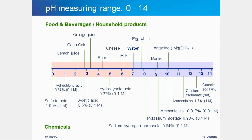The whole pH range includes both acidic and alkaline pH values. The scale for pH is defined from 0 to 14, where pH values from 0 to 7 are in the acidic range and pH values from 7 to 14 are in the alkaline range. The pH value 7 is neutral. On the slide, some examples of samples are given for the whole range. For daily use, pH values in the range of pH 2 to pH 10 are common.